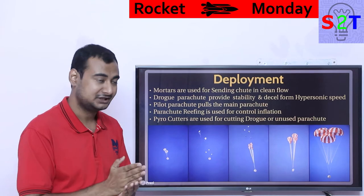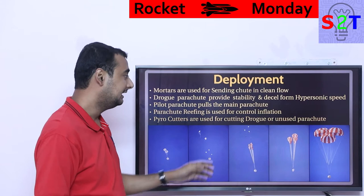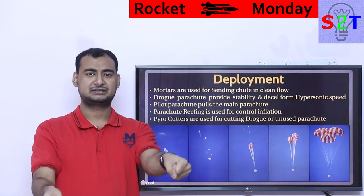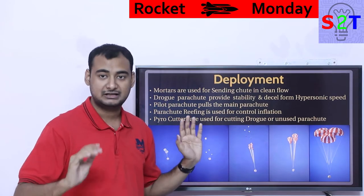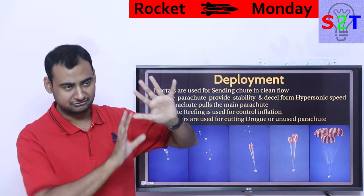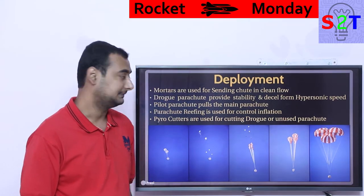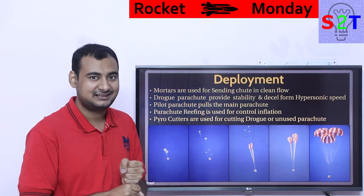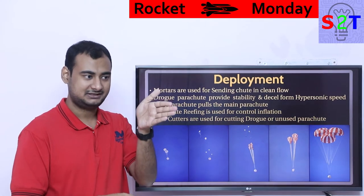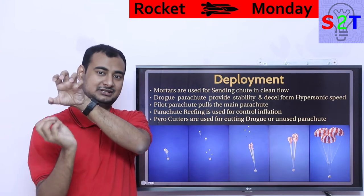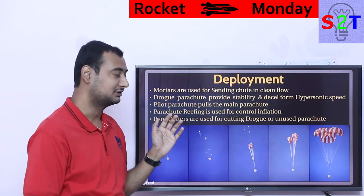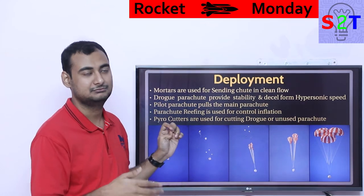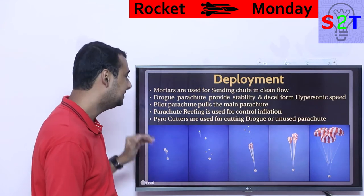Drogue parachutes are the first deployed — they provide stability, handling from hypersonic speeds around 2,000 km/h and bringing it down to below 1,000 km/h. There are generally only two, fired at specific angles to stop tumbling and apply braking. To cut them — since the cables are strong enough to handle those speeds — an explosive bolt is used: a steel plate, anvil-style cutter, and a piston with actual explosives. This cutting mechanism can also be used in emergency scenarios where a failed parachute needs to be jettisoned.